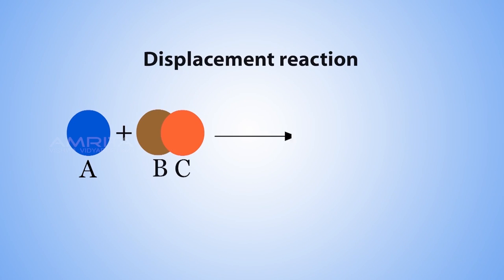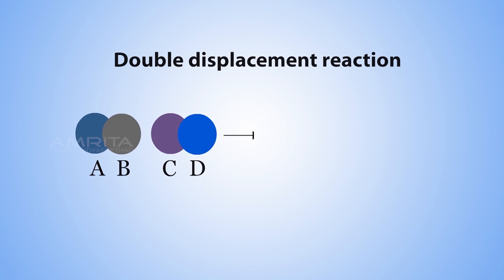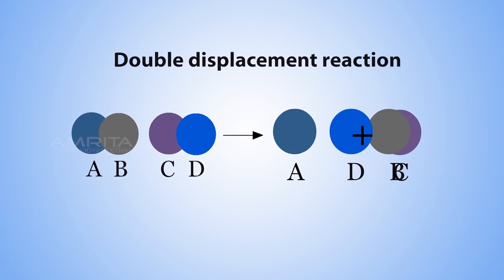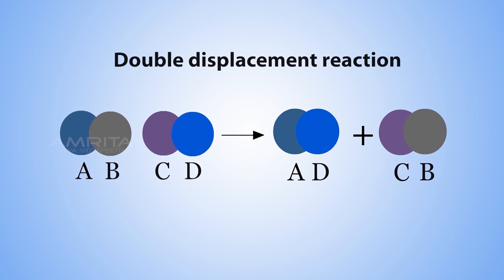In a displacement reaction, one element replaces a similar element in the compound, whereas in a double displacement reaction, the ions of two compounds exchange places in an aqueous solution to form two new compounds.